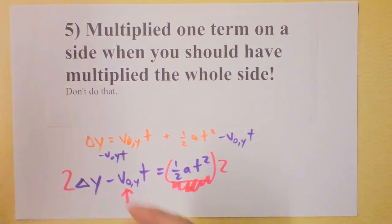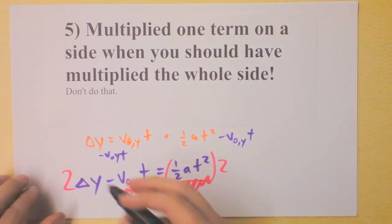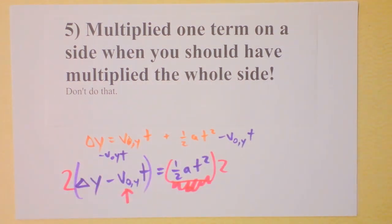That's supposed to be multiplied by 2 because it's part of the side. And you know the way to fix this, right? The proper way to fix this is to get out your tropical violet and put that in parentheses. Multiply the side.